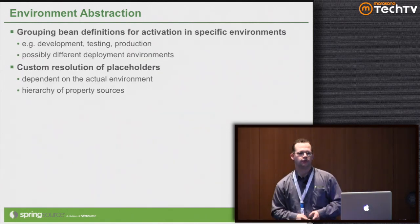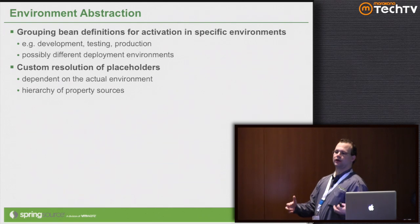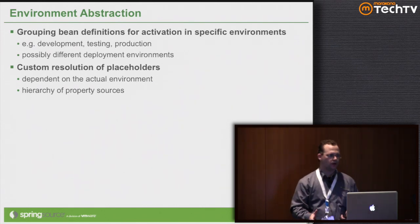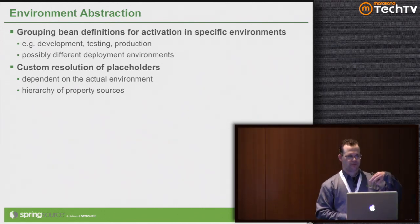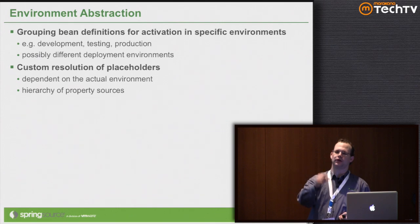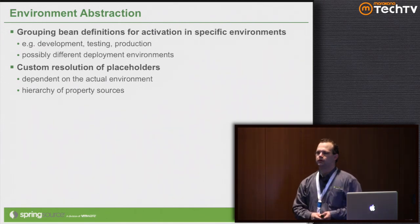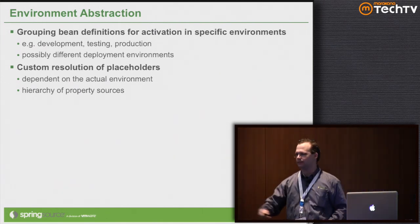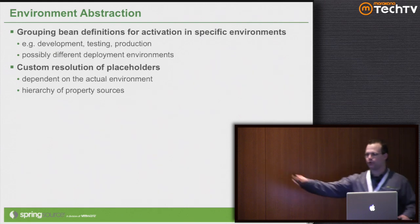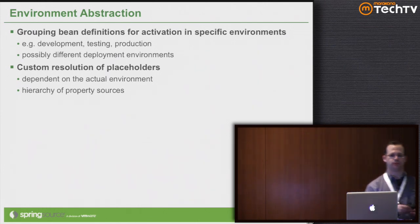First things first — the environment abstraction. This is something introduced in Spring 3.1. It's basically a way to ask, in a programmatic way, the Spring container for information about the environment in which your application is running. You're going to ask for property files. How many of you have used the property placeholder resolution mechanism? You can parameterize your configuration based on property files.